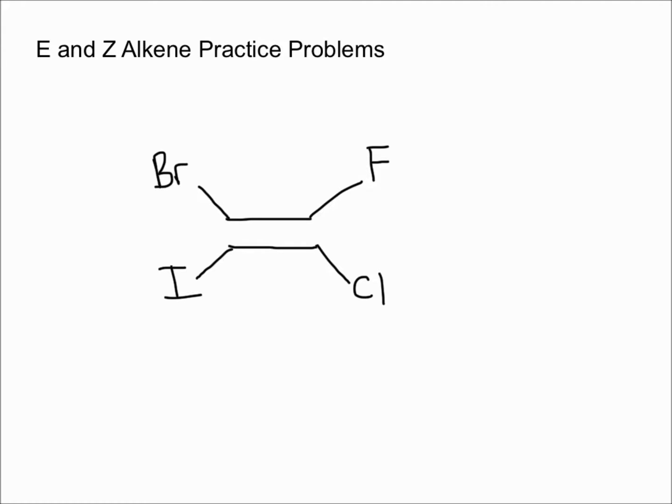In this video I'm going to do some practice problems for determining E and Z alkenes. Let's begin with this molecule right below. The first step we're going to cut it in half, and then we're going to start with the left side and determine which one is the highest priority, whether it's the bromine or the iodine.